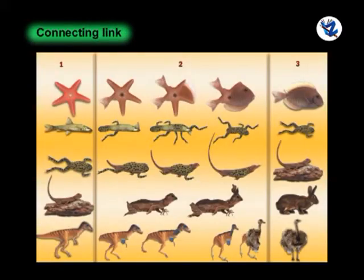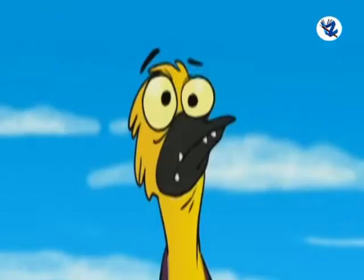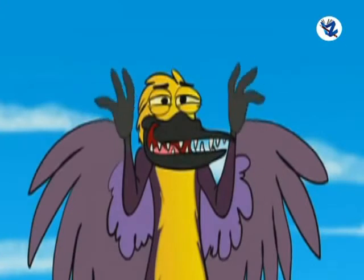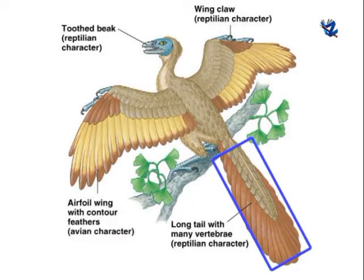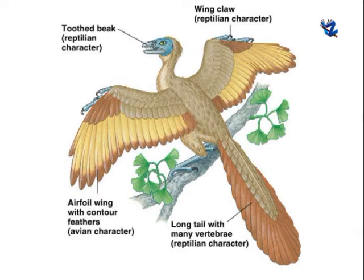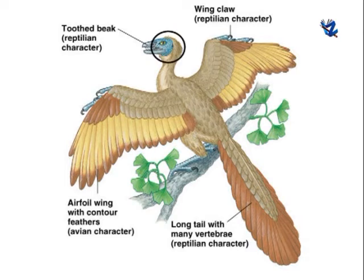Connecting link: It is an intermediate or transitional stage between two organisms, possessing structures common to both groups and indicating the evolutionary line; also called the missing link. For example, Archaeopteryx is the connecting link between birds and reptiles. Its reptilian characters include a long tail supported internally by several caudal vertebrae, scales on the body and solid non-pneumatized bones. Its avian characters include a feathery exoskeleton, fused bones, a rounded cranium with large orbits, a single condyle, jaws modified into a beak and forelimbs modified into wings.